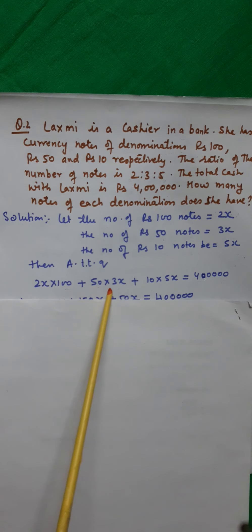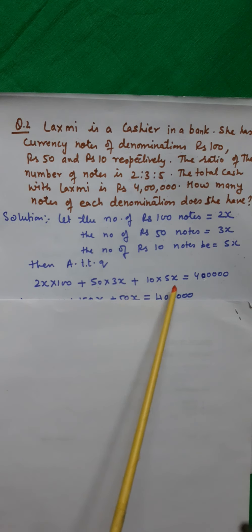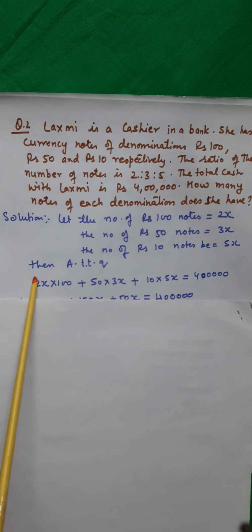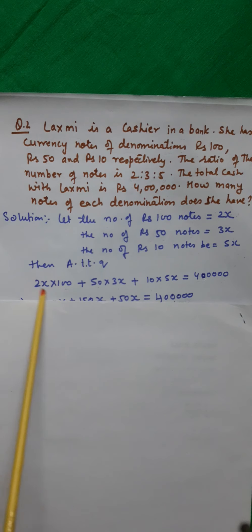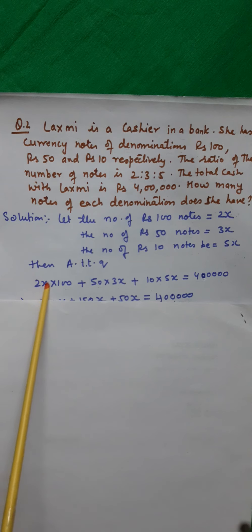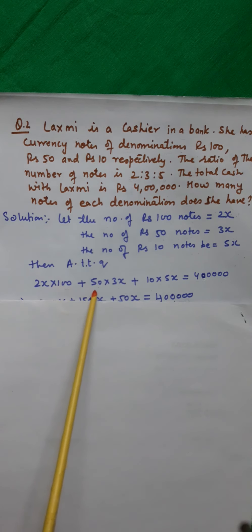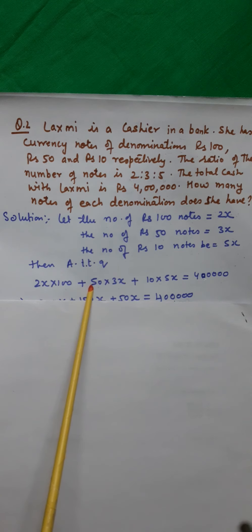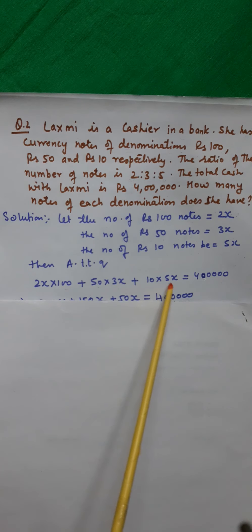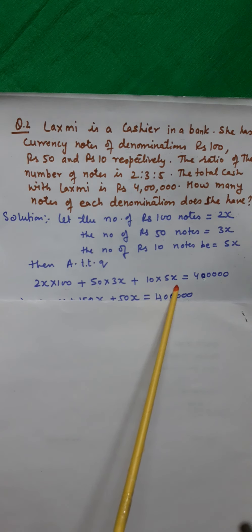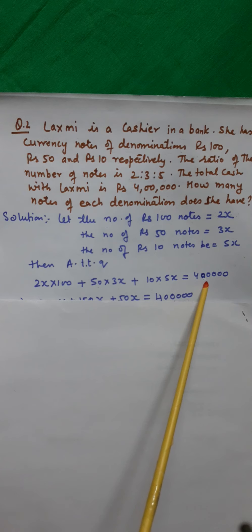Then according to the question: 2x × 100 plus 50 × 3x plus 10 × 5x is equal to 4 lakhs. Because the amount in the form of 100-rupee notes is number of 100-rupee notes times 100. Amount in 50-rupee notes is number of 50-rupee notes times 50, and amount in 10-rupee notes is 10 times number of 10-rupee notes. The total amount is 4 lakhs.